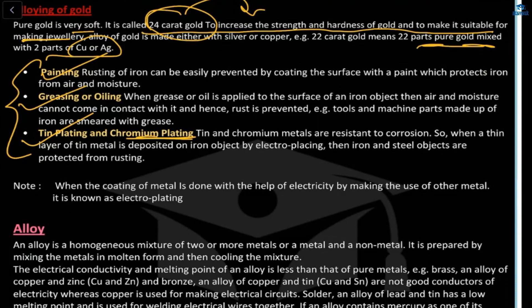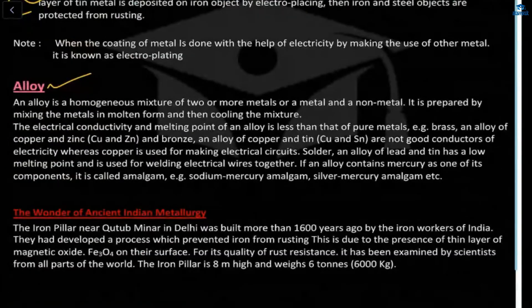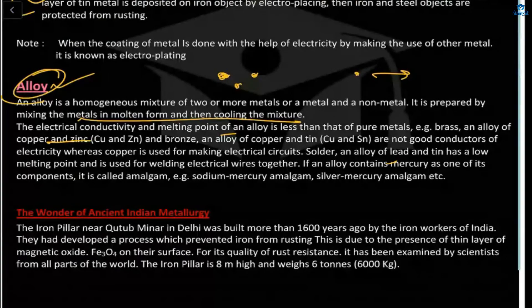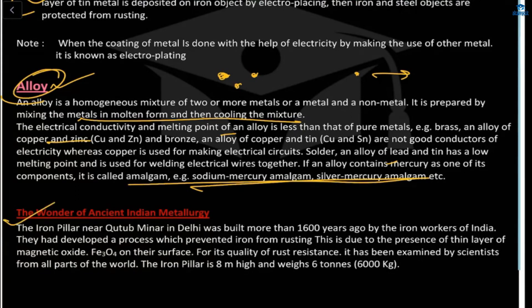An alloy is a homogeneous mixture of two or more metals, or a metal mixed with a non-metal, prepared by mixing and cooling. The electrical conductivity and melting point of an alloy is lower than its component metals. Examples: brass (copper + zinc); solder — an alloy of lead and tin — has a low melting point and is used in electrical circuits.